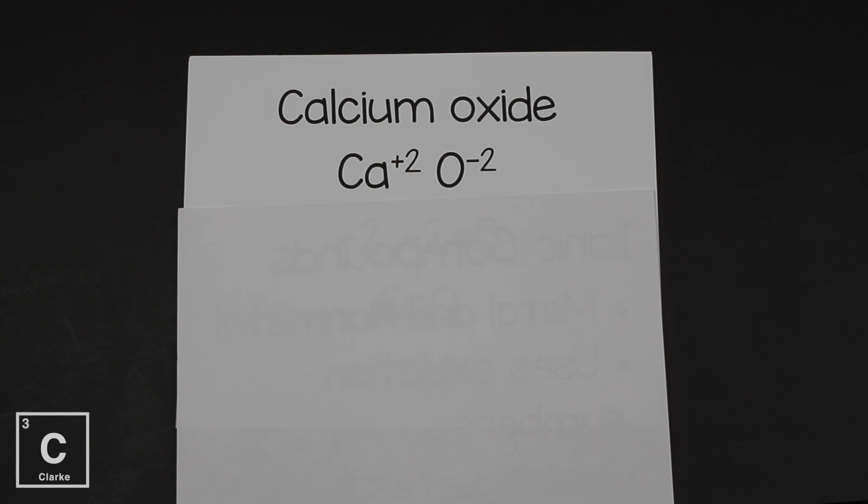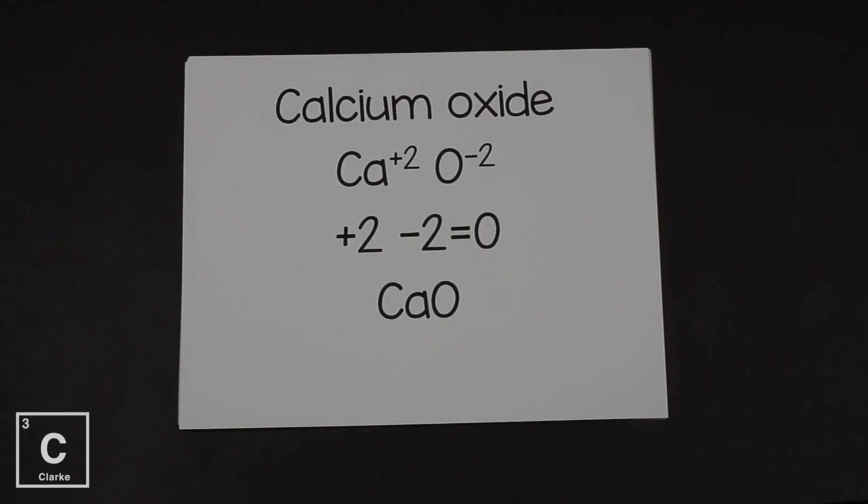So we're going to write the symbols of each and put the oxidation numbers of each. Calcium with a plus two. Oxygen with a minus two. And remember, ionic compounds, they've got to be neutral. So since plus two and minus two equals zero, it only took one calcium and one oxygen to get a neutral compound.